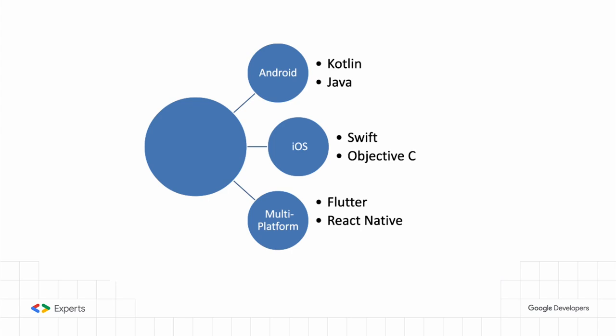The history is similar for iOS: they started with Objective-C and then advanced to Swift. Kotlin and Swift are pretty similar — as an engineer who has built for both, the code I write for Swift and Kotlin is very alike. For multi-platform development covering both platforms, you can use Flutter or React Native. There's also Kotlin Multiplatform, though I'm not certain of its current stability.